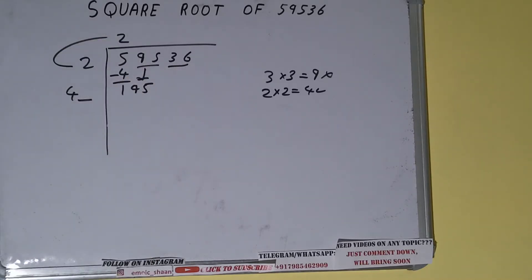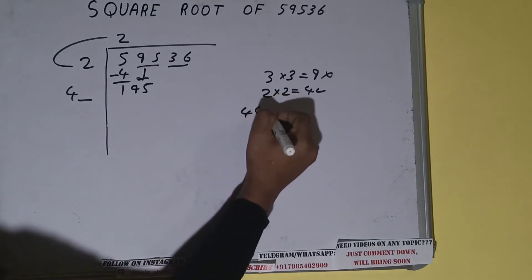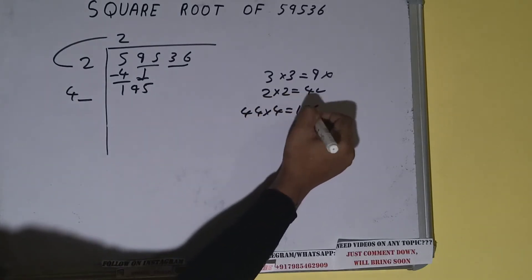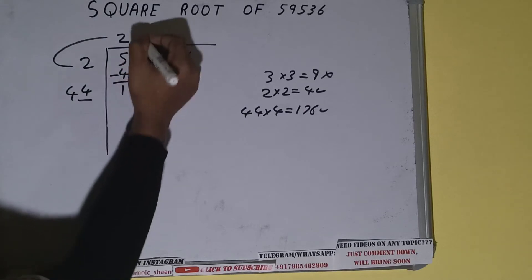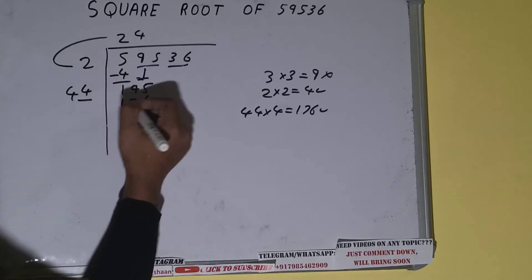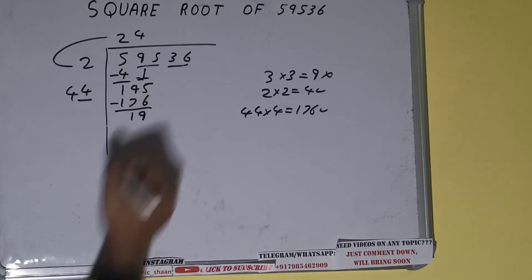Now whatever number we write here, we have to write here also. So we can try 4 times, that is 44 into 4. We can try it, it will be 176, which is good to use. So 4 here and 4 here, 176, subtract it, and 19 will be left.